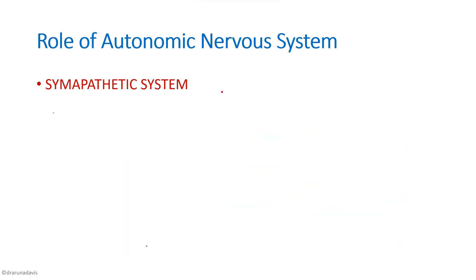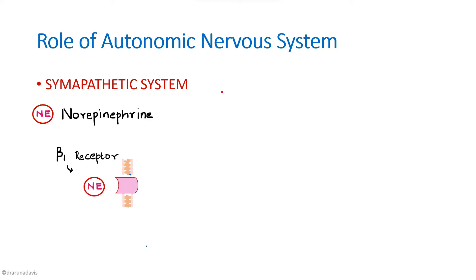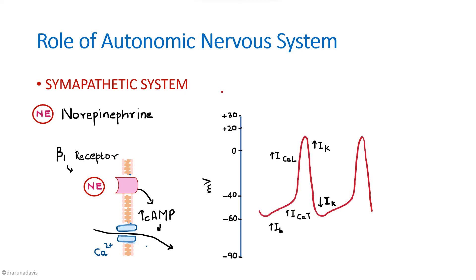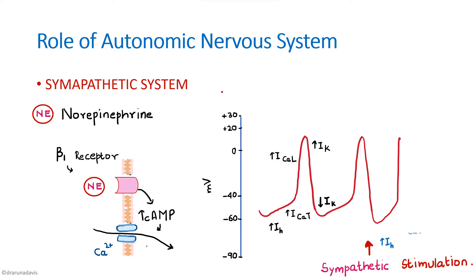For the sympathetic system, the neurotransmitter is norepinephrine. Norepinephrine binds to beta-1 receptors, causing an increase in cyclic AMP levels. This leads to opening of calcium channels and calcium influx. On sympathetic stimulation, the prepotential slope increases — it becomes much steeper — thereby increasing the heart rate.